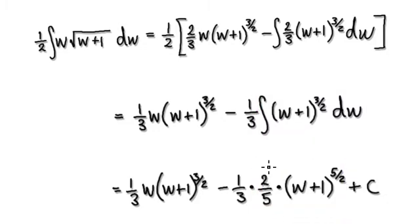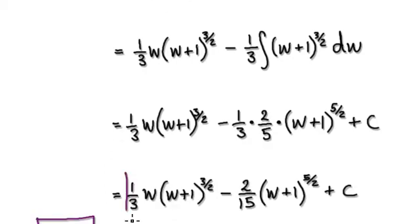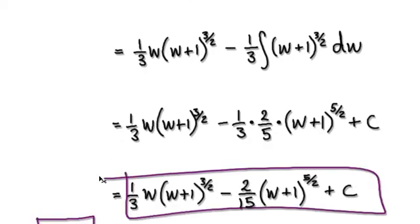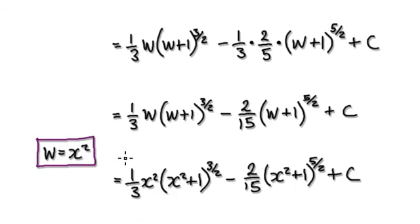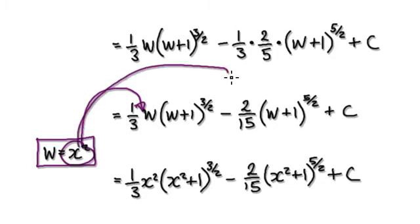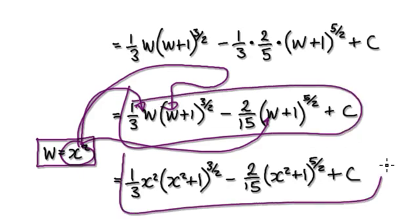And then tidy up. It will then give you this. And then earlier we said, let w equals x squared. So now we can just put the x squared back into here, back into here. And then blah, blah, blah. From here it will then take you to here.